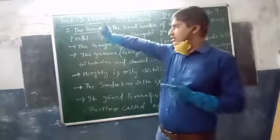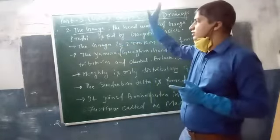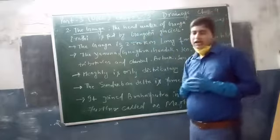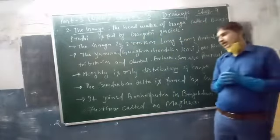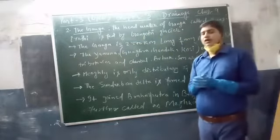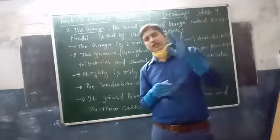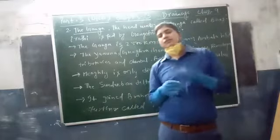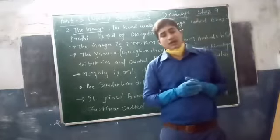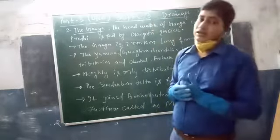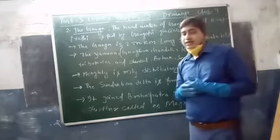This is the second one — the Ganga. We all know there are 3 river systems. There are 3 rivers that come under the Himalayan river system, and the Ganga is the second one.